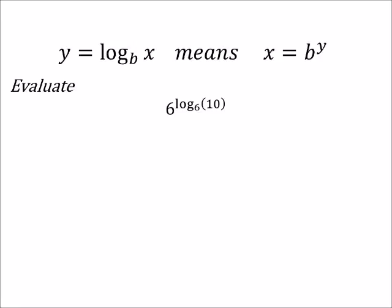According to the rule, since we have the same basis for the log and the exponent, we can just cross those out and we would find that it equals 10.